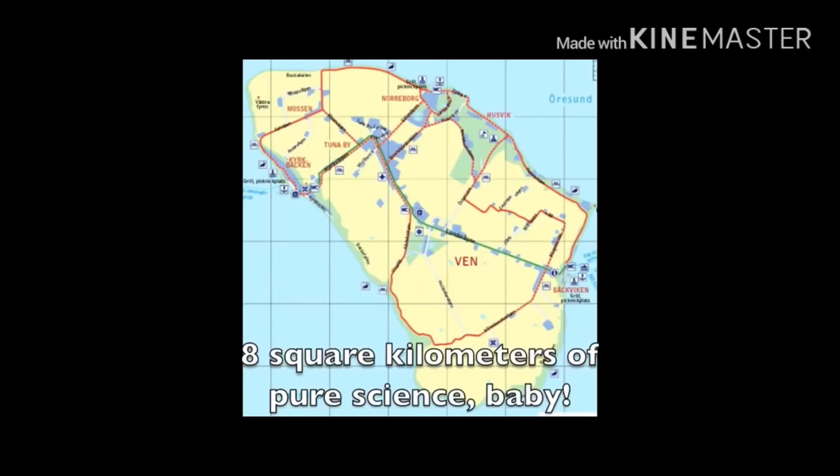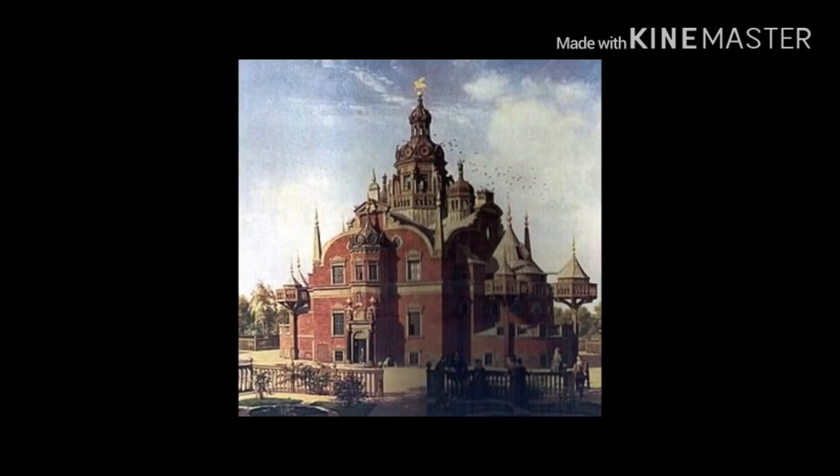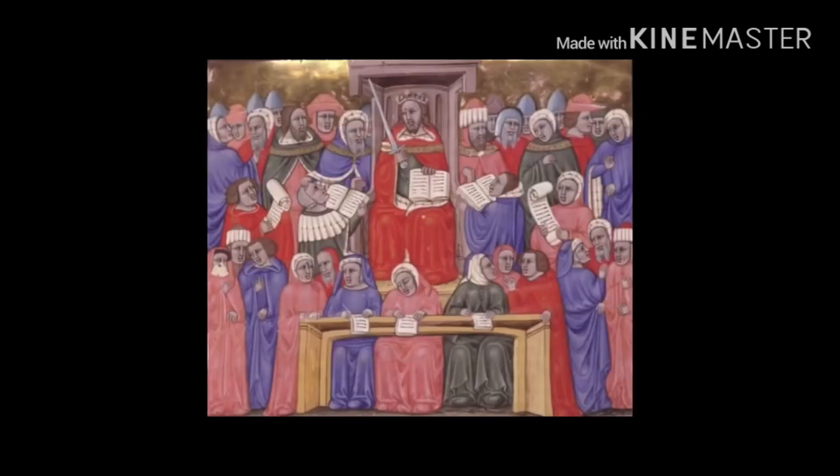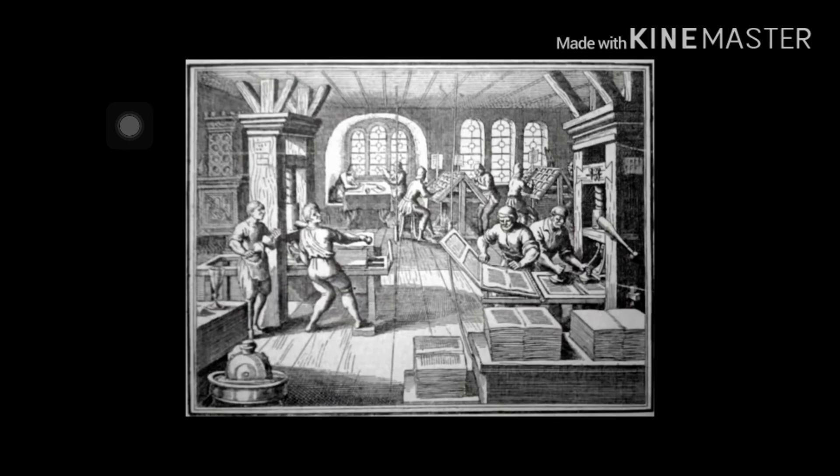On this island, Brahe constructed a huge castle which consists of hundreds of rooms. He recruited hundreds of scientists and started a detailed analysis of the solar system. He had a publishing house also for printing his observations.